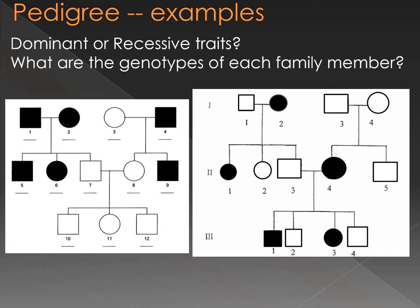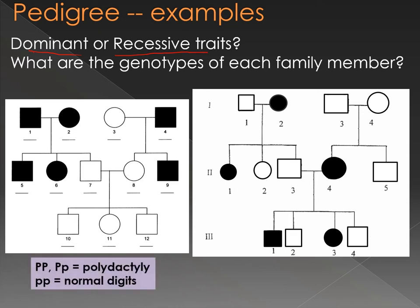Here is an example of a couple of pedigrees. Are these dominant or recessive traits? This one on the left is an example of a dominant trait — polydactyly, where a single nucleotide polymorphism causes a person to grow an extra finger. If it is a dominant trait, heterozygotes will be affected, as will homozygous dominant individuals, and homozygous recessive individuals have normal digits. All the white circles and squares are unaffected, so they must all be homozygous recessive.